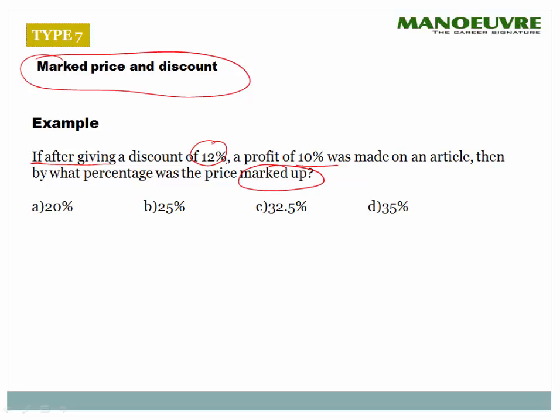For example, you buy a product for 100 rupees and put a sticker of 200 rupees — that is a 100% markup. Now: assume marked price is 100. After a 12% discount, selling price = 88. This SP of 88 gives a 10% profit.